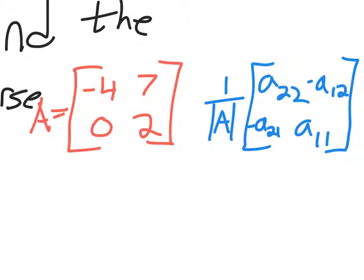Let's give our red matrix the name A. If you're asked to find the inverse of a matrix, it's found by doing this stuff in blue.